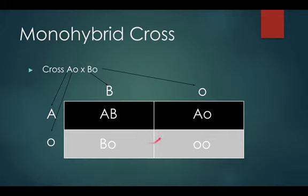So that's blood typing — just basic crosses like we've done before. Stick with the codominance theory, but remember when thinking about codominance, there is also a recessive. Use this video to figure out the blood typing worksheet, which also has a video on it.